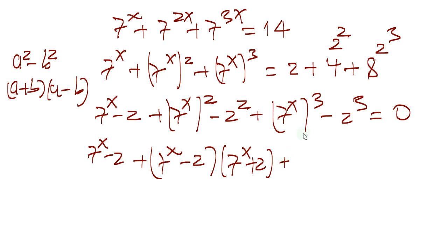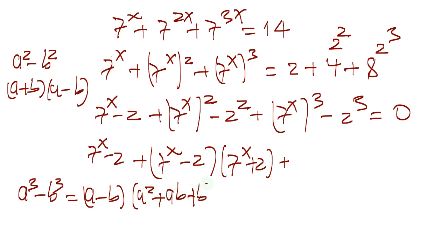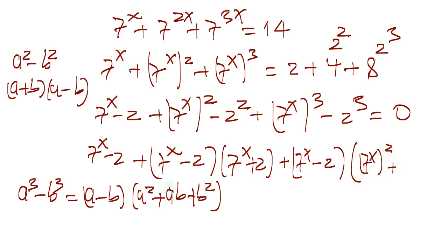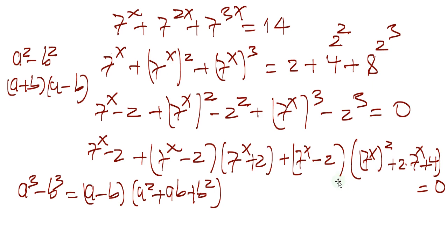And then here we have a difference of cubes. Difference of cubes: a cubed minus b cubed equals (a − b)(a squared plus ab plus b squared). So here we're going to have (7 to the x minus 2) multiplied by (7 to the x squared plus 2 times 7 to the x plus 4), and then this equals 0.